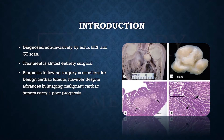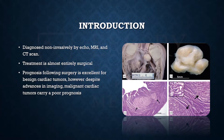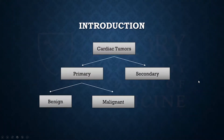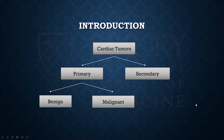Treatment is generally entirely surgical. Another major takeaway: metastatic tumors to the heart are generally a sign of end-stage disease with very poor prognosis, whereas benign cardiac tumors carry a much better prognosis after surgery, with low rates of complications and recurrence. Cardiac tumors are either primary — coming from the heart — or secondary — coming from other parts of the body. Of primaries, they're either benign or malignant.